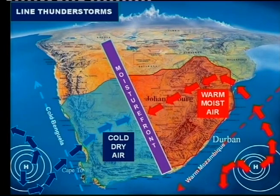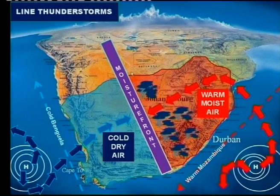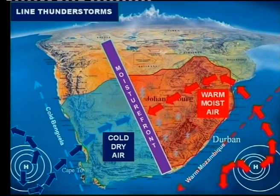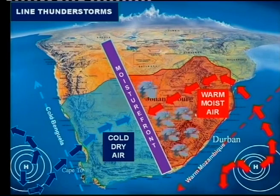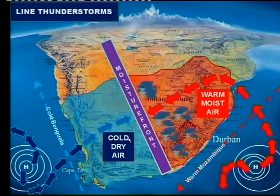These two air masses meet at the moisture front - that is the front line where cold dry air and warm moist air meet. Line thunderstorms occur all along this moisture front and to the east of it. This is very important: it's towards the east because on the eastern side of the country we have warm and moist air. It cannot rain on the western side because that air is cold and dry.